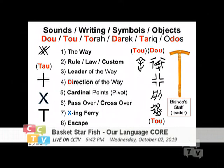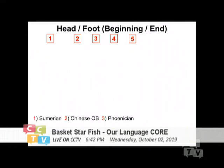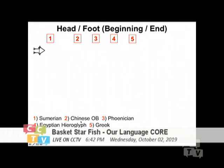Interestingly, east and west, we are all sharing the same sound, the same idea. The next slide, I will carry on. And this is a very complicated slide — bear with me. Because I'm comparing four different languages: the first one will be Sumerian, the second one will be Chinese oracle bones, the third will be Phoenician, the fourth will be Egyptian hieroglyph, the fifth one will be Greek. And according to the western linguist, these should be different family trees. But I will show you how similar they are from the very beginning.